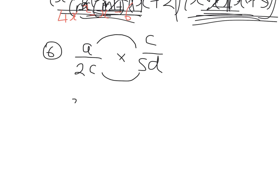For multiplication we just multiply top and multiply bottom. So a times c is ac. So nothing to do with kiss and smile. Multiplication, multiply the two numerators and two denominators. A times c is ac, 2c times 5d is 10cd. At that point look for simplification. I can cancel the c's. Final answer is a over 10d.